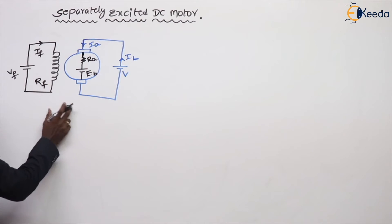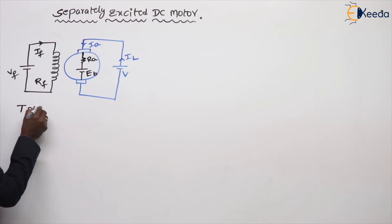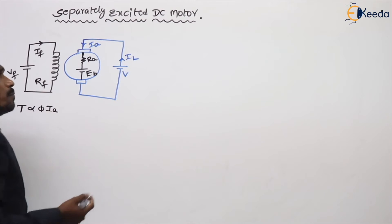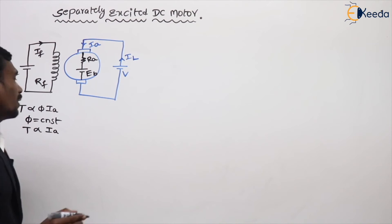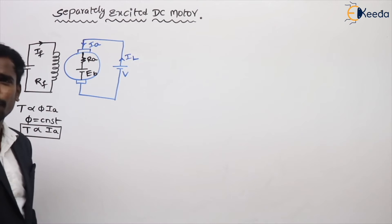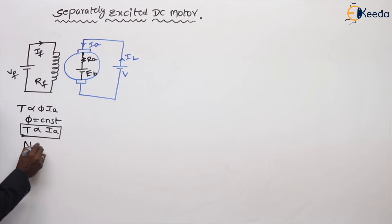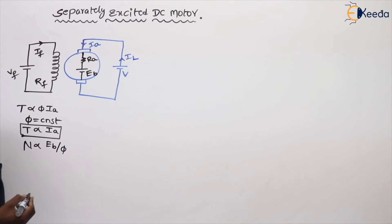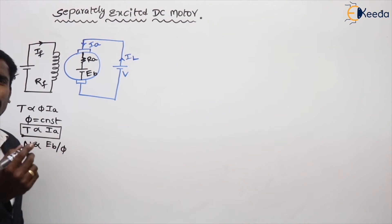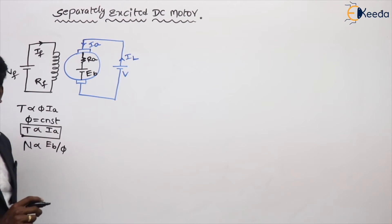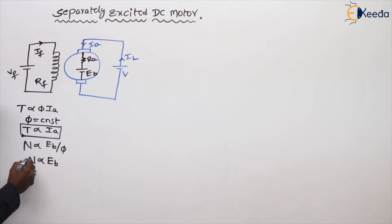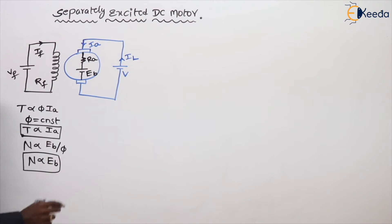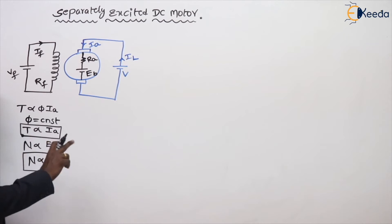Now, the key equations. We know torque is directly proportional to phi into IA. But even though the load changes, the flux is constant. So torque is directly proportional to IA — very important for the separately excited motor. Also, speed is directly proportional to Eb divided by phi. Since phi is constant, speed is directly proportional to Eb. These two relationships are important for drawing the graphs.